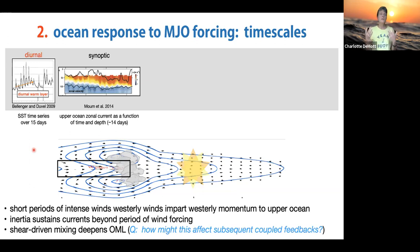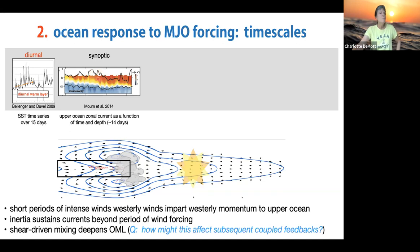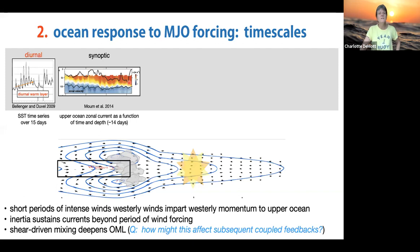Ocean adjustment can also happen on synoptic timescales. This figure from Jim Moum's 2014 paper shows upper ocean zonal current as a function of time and depth in the Indian Ocean. Red shading is eastward current. There are a few pulses of strong westerly winds lasting one or two days each, but on the equator these surface jets can persist for many more days beyond their surface forcing—a synoptic timescale response in the ocean to a momentum flux by the MJO.